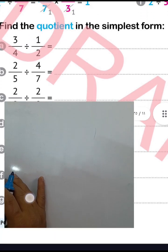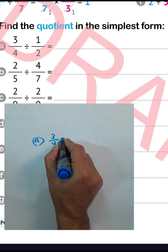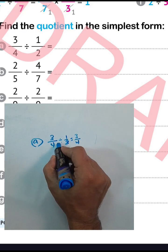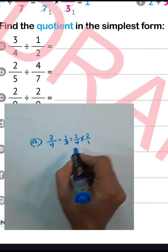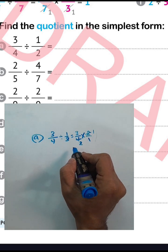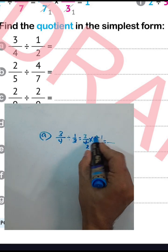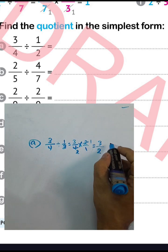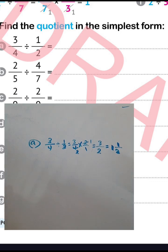Question letter e: 3 over 4 divided by 1 over 2. Write the first fraction, then convert from division to multiplication by raising the inverse of 1 over 2 to be 2 over 1. Simplify: 2 divided by 2 equals 1, and 4 divided by 2 equals 2. Then 1 times 3 equals 3, and 1 times 2 equals 2, giving 3 over 2. Converting from improper to mixed number: 3 divided by 2 equals 1 remainder 1, so the result is 1 and a half.